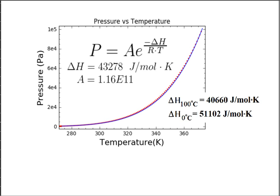We know that delta H is a function of temperature, and we learned from the prior graphs that when you have ice, delta H is fairly constant at 51,102 joules per mole K. If you look up online, you'll probably find that a delta H for water is usually quoted at 100 degrees at 40,660 joules per mole K.